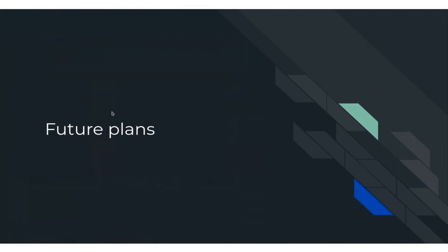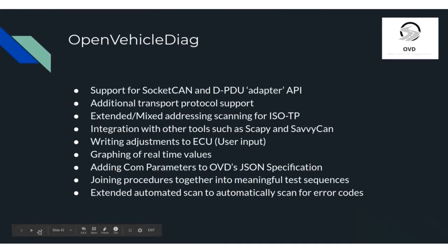Briefly touching on some future plans. The main app has loads of potential additions: support for Socket CAN for Linux and the DPDU adapter API, additional transport protocol support (K-Line-based ones, J1850, serial communication interface, Diagnostics over IP, etc.), support for extended and mixed addressing scanning for ISOTP, optional integration with other tools such as SCAPI and Savvy CAN, and writing adjustments for ECU user input — which is just tweaking a parameter like idle speed, not variant coding.